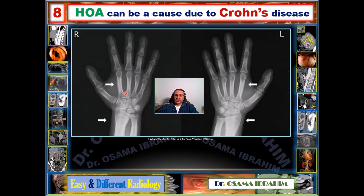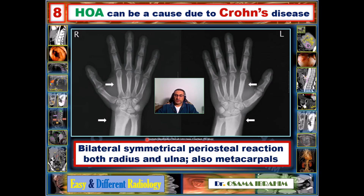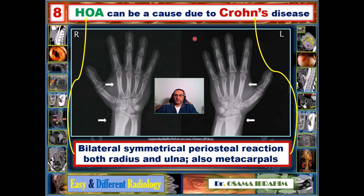Here is another case with hypertrophic osteoarthropathy in the radius and ulna — both showing periosteal reactions — and also the metacarpals, particularly the second one in both hands, showing symmetrical periosteal reactions. We consider this HOA and search for a primary or secondary cause. This patient had bilateral symmetrical periosteal reactions in the radius, ulna, and metacarpals, and was a Crohn's disease patient. This finding is consistent with HOA secondary to Crohn's disease.